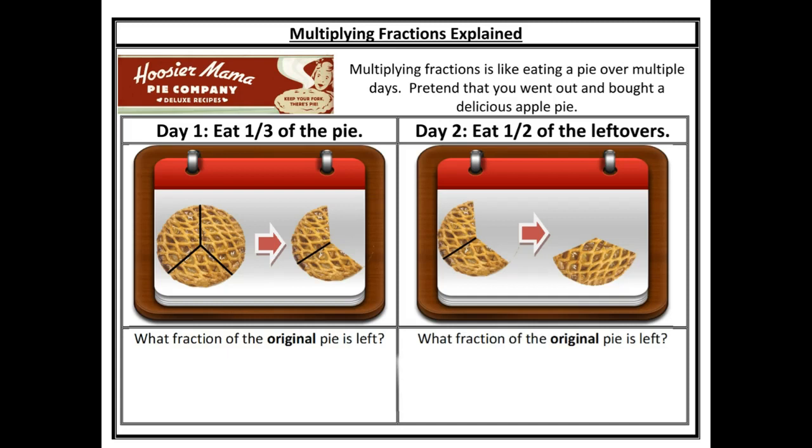Imagine that you work at a diner that serves apple pie. At the beginning of the day you have one whole pie. Someone comes in and orders one-third of it and eats one-third of it, so we're left with two-thirds of a pie. If another customer comes in and orders half of what is left over, we have two-thirds, so half of that would be one-third. What we just did was two-thirds times one-half equals one-third.